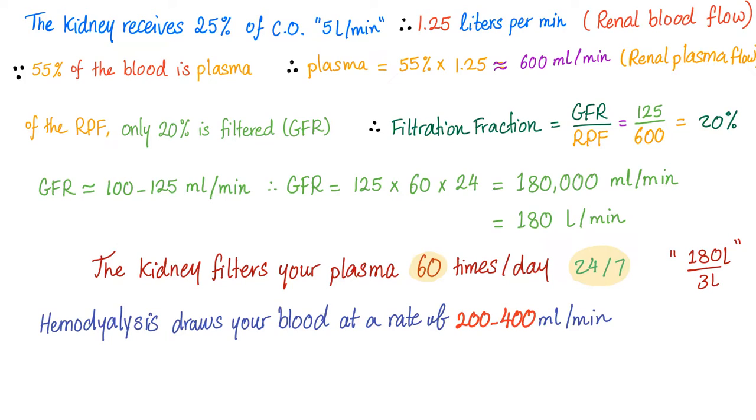GFR per day is 125 times 60 times 24 equals 180,000 mL per day and 180 liters per day. And since your plasma volume is 3 liters, the kidney filters your freaking plasma 60 times per day, 24-7. Hemodialysis at best draws your blood at a rate of 200 to 400 mL per minute. And it's not 24-7. Like, you go to hemodialysis like three times a week or something like that. Your kidney is freaking amazing.